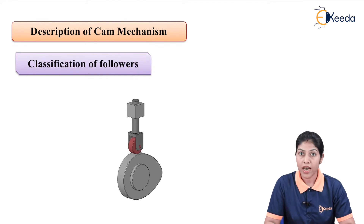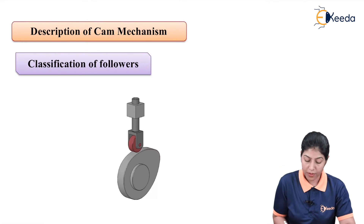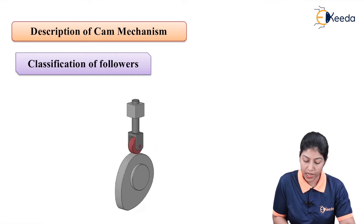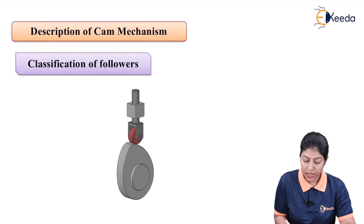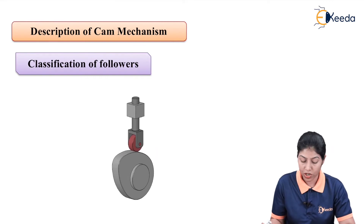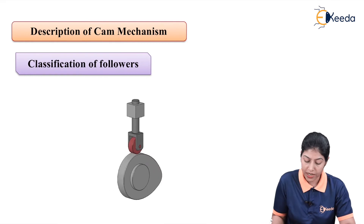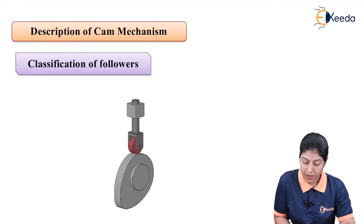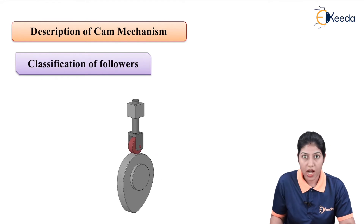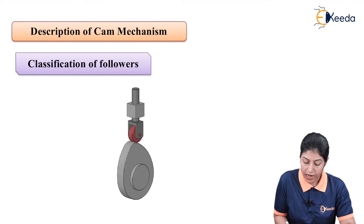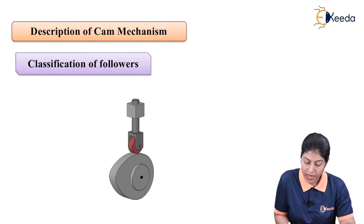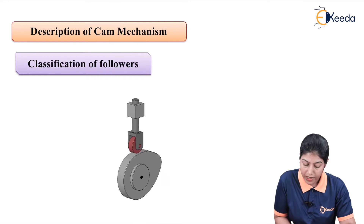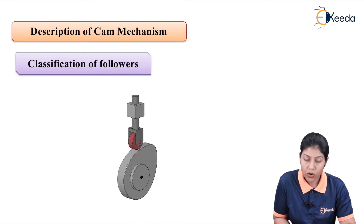As we know, the cam mechanism is a device or mechanism where we consider one more element called the follower. This mechanism is generally used to transmit or to convert rotary motion into reciprocating motion. The cam is a rotating element rotating about one particular axis connected with the shaft, and when the shaft rotates, the cam also rotates. The cam is not a circular element, and it is in contact with the follower.